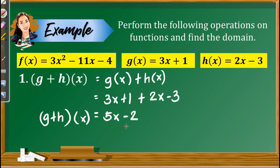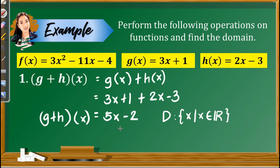As for the domain of this function 5x minus 2: g of x is a linear function since the highest exponent is 1, and h of x is also a linear function. Therefore, combining the domains of these two linear functions gives us the set of real numbers. All polynomial functions have a domain which is the set of real numbers, and in the new function, we can substitute any real number to x and find a real number value of y.